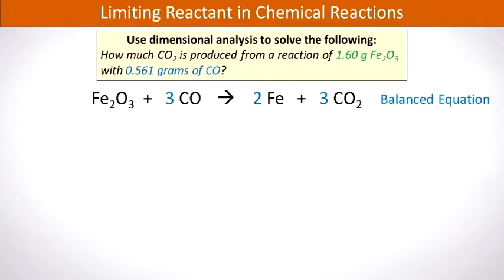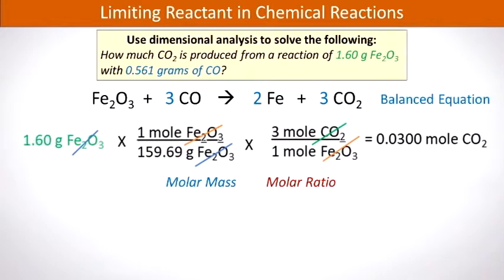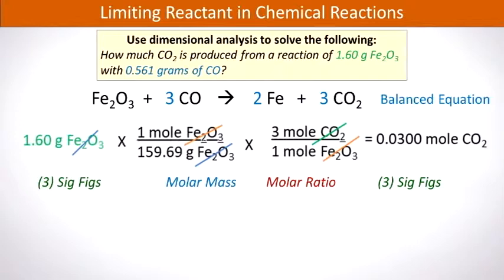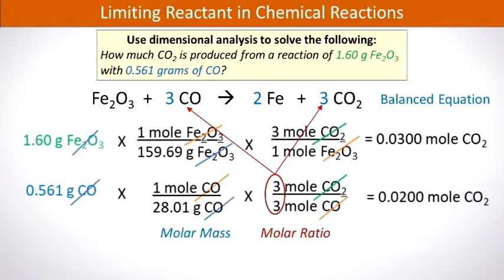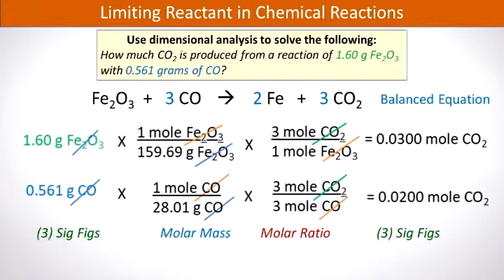We have a balanced equation, which is always the first step. Starting with 1.60 grams of iron(III) oxide, we carry out a dimensional analysis using grams per mole of iron(III) oxide, then interconvert moles of iron(III) oxide to moles of carbon dioxide, obtaining 0.300 moles of CO₂ — 3 sig figs. Next we carry out the same process starting with carbon monoxide, using grams per mole and then the mole-to-mole ratios from the balanced equation, and we obtain 0.0200 moles of CO₂.